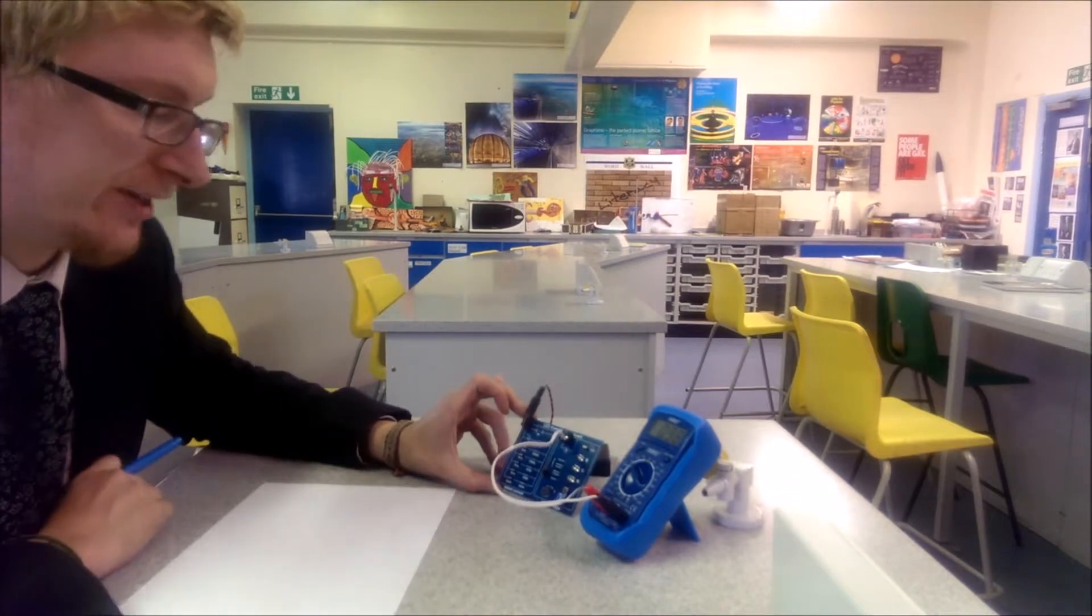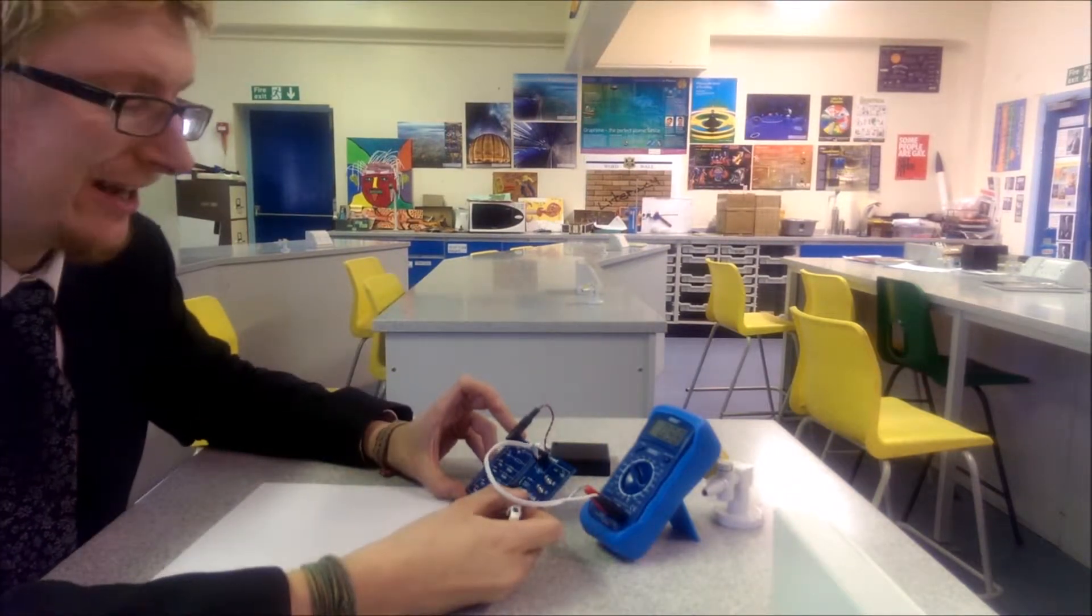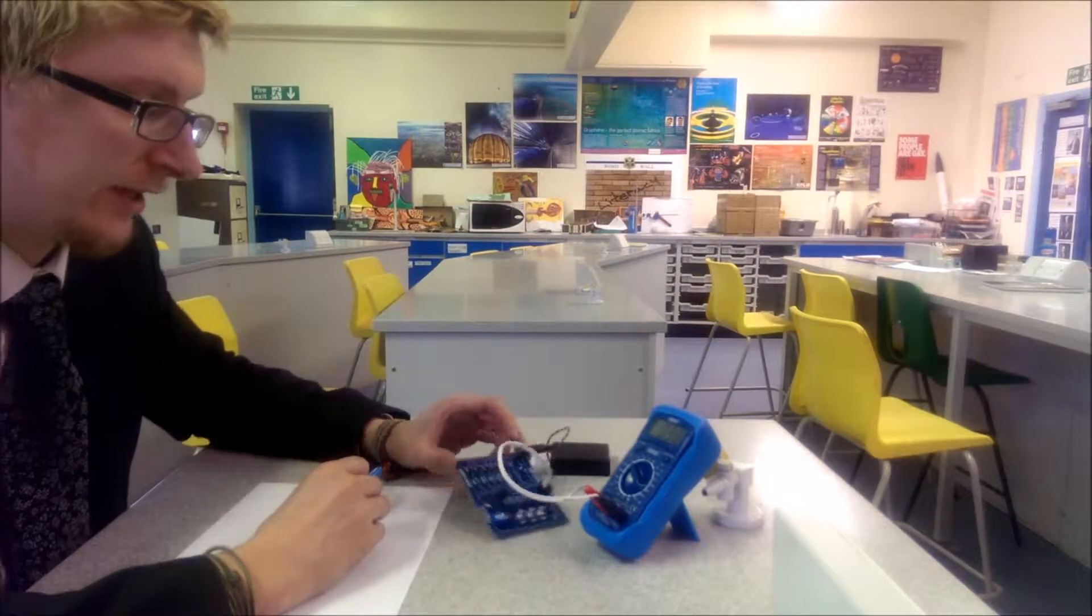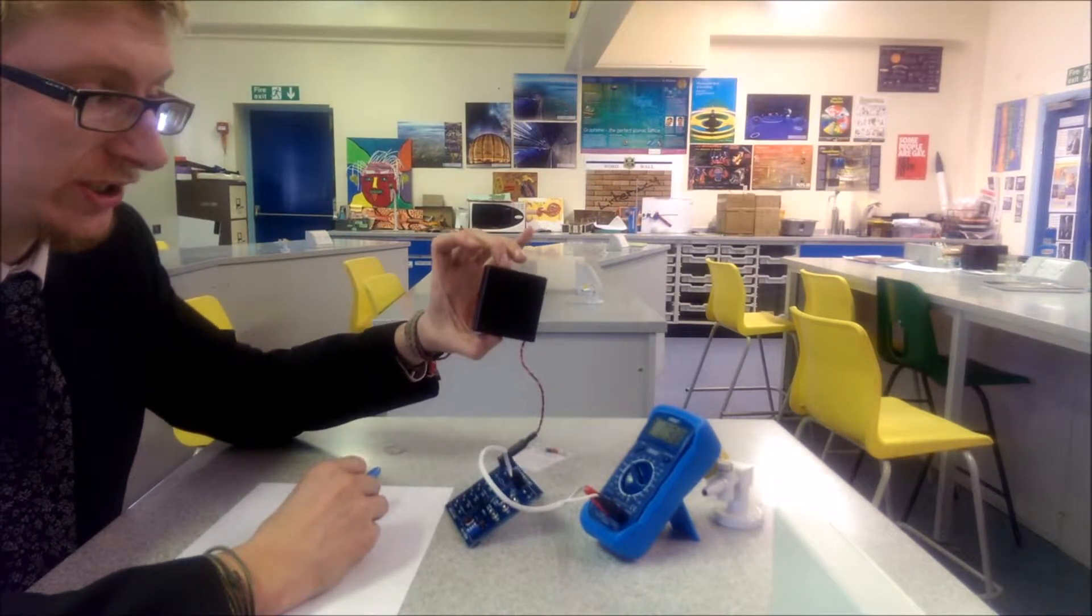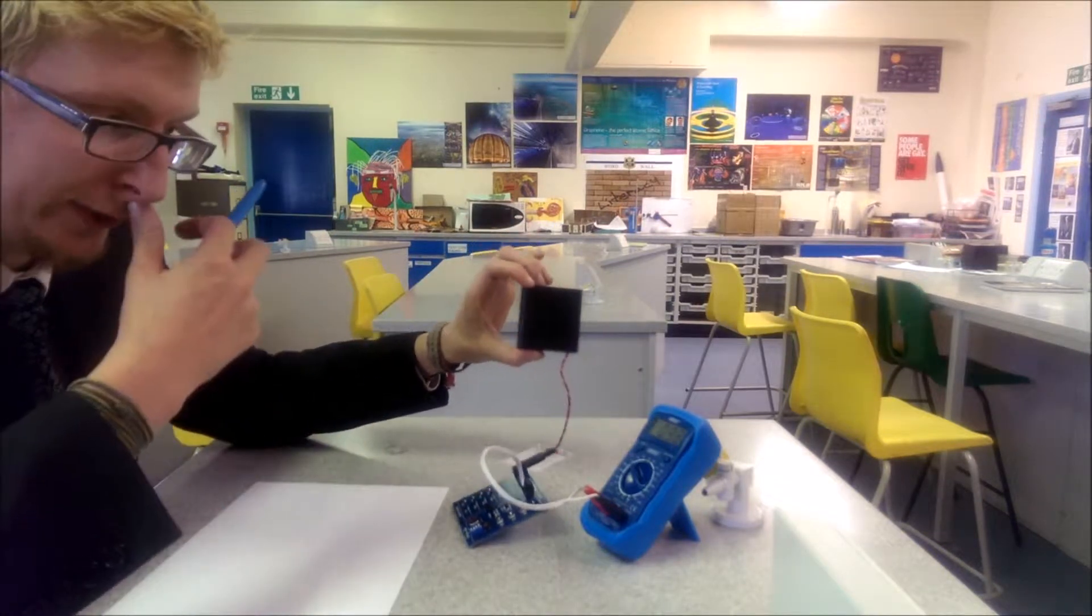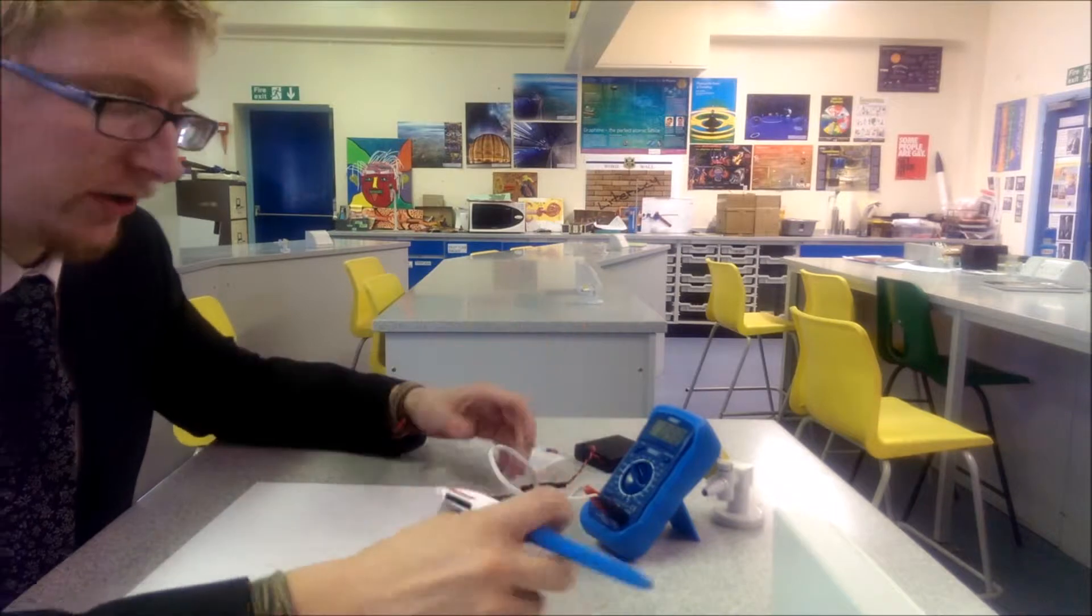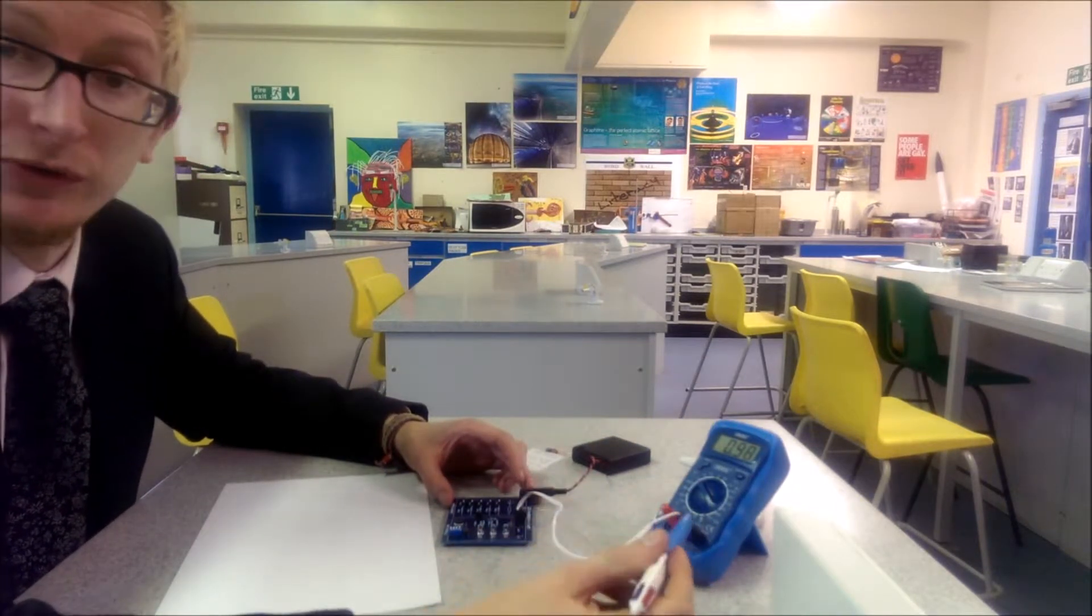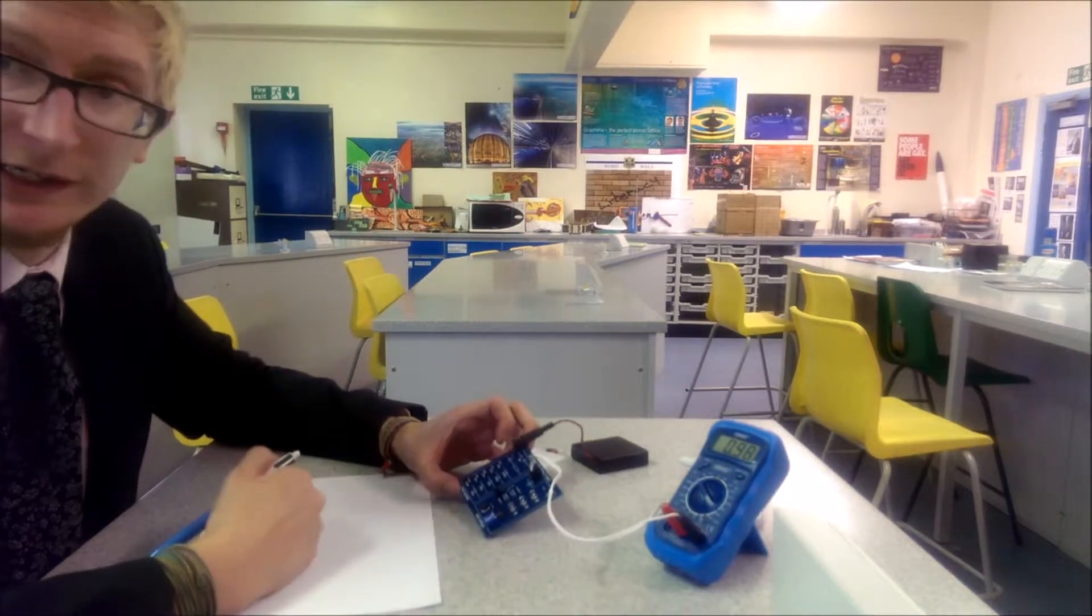We're going to use an LED investigations board which has three LEDs on it and a way to vary the voltage. It's connected to a power pack which contains four AA batteries with a maximum voltage of six volts. To work out how much voltage is going into them, we're going to use a voltmeter attached to the investigations board.